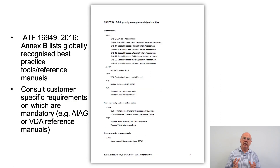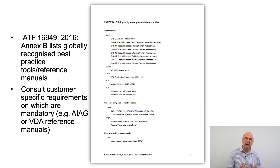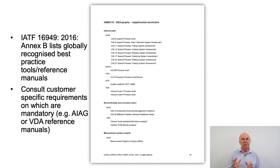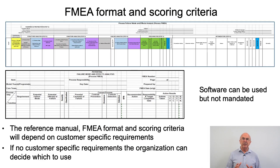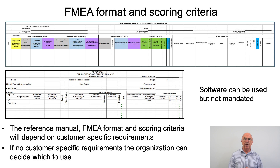We also need to be able to make reference to Annex B in IATF 16949. This is where we see a list of globally recognised best practice tools and reference manuals. The customer will often mandate some of the documents listed in Annex B. One of the things that might be influenced by customer-specific requirements is the format that we use for FMEA and the scoring criteria.